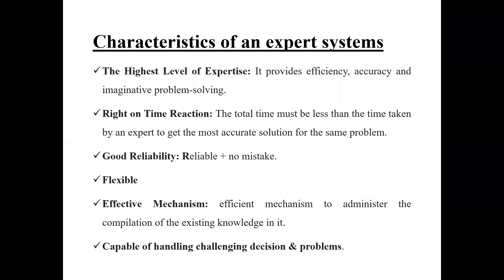What are the characteristics of an expert system? The highest level of expertise — it provides efficiency and accuracy in problem solving because it has the highest level of human intelligence. Then there is on-time reaction: the time taken by this expert system is much less than the time taken by a human expert to get the most accurate solution for the same problem. For example, a person takes 24 hours whereas the expert system takes only a few minutes, giving better outcomes in lesser time.